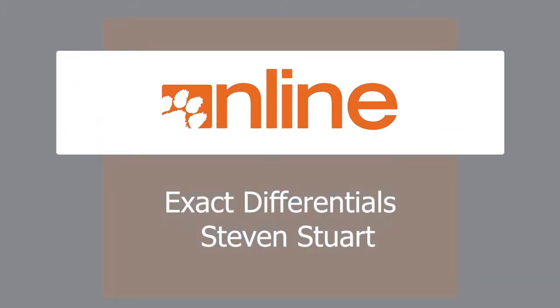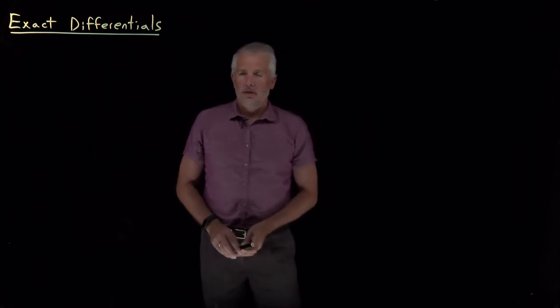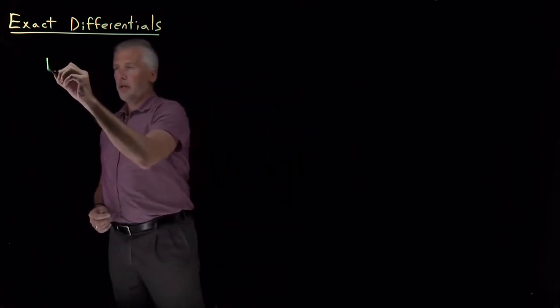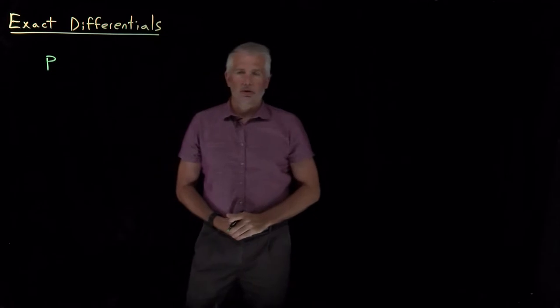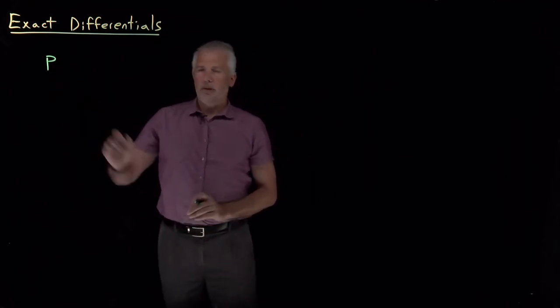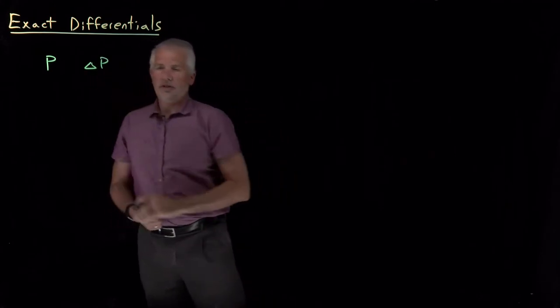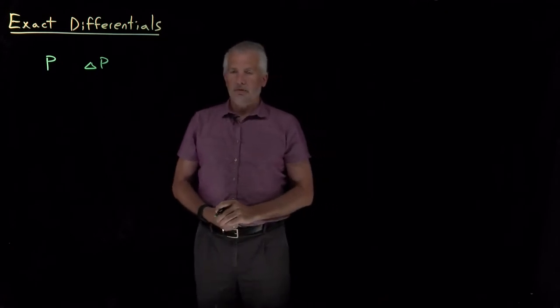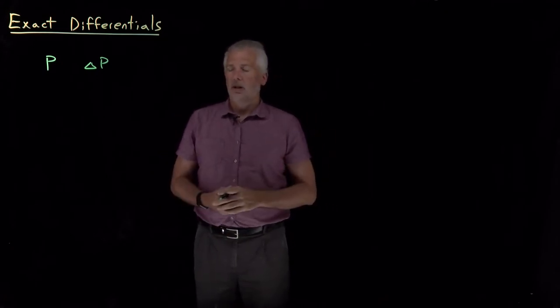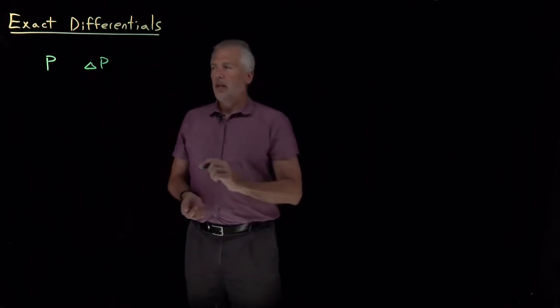When we talk about thermodynamics, we're very often talking about macroscopic properties like pressure, energy, volume, or temperature. Sometimes we talk about the value of the property itself, and sometimes we talk about changes in that property — for example, the difference between the pressure inside a container and outside, or the change in pressure as some process occurs.